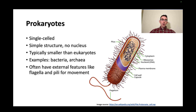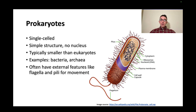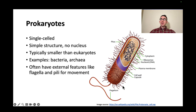Just another slide on prokaryotes: in general, they're single-celled, have a simple structure, no nucleus, and are usually smaller than eukaryotes. Some examples are bacteria and archaea. Something kind of cool is that because they're single-celled, they often have external features like flagella and pili on the outside that allow them to navigate and move around their environment.